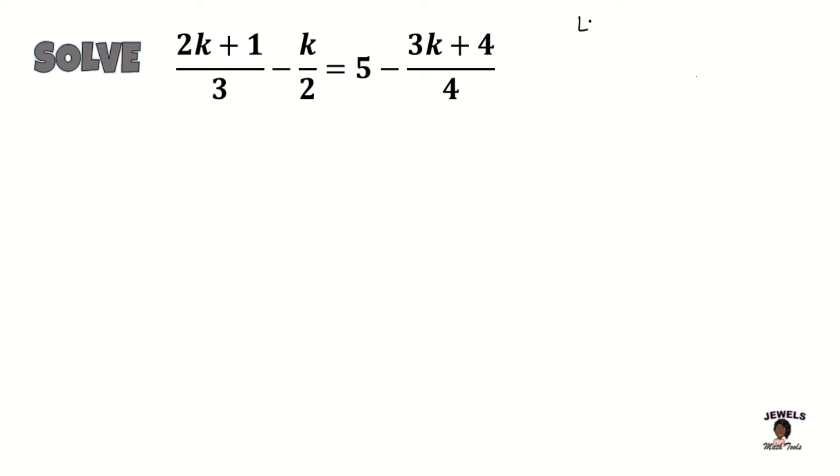So our first step needs to be to find our LCD. And remember whenever finding your LCD, it's the same thing as finding the LCM. The D just means we're working with numbers in the denominator, but overall we're still finding the lowest common multiple of the numbers in our denominator, which is 3, 2, and 4. So the LCD of our numbers 3, 2, and 4 is going to be 12.